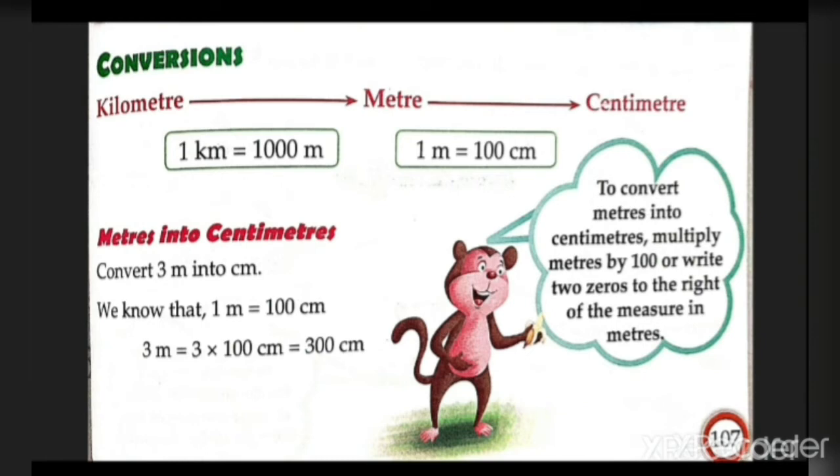One kilometer is 1000 meters. One meter is 100 centimeters, and one centimeter is 10 millimeters. To change kilometers into meters, multiply the kilometers by 1000. Three meters into centimeters: 3 times 100 cm equals 300 cm.